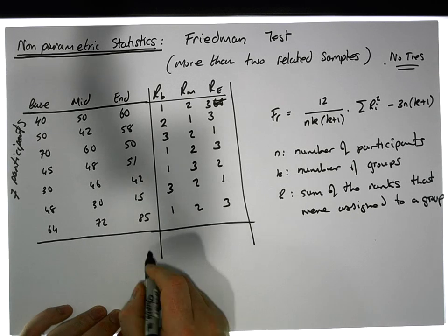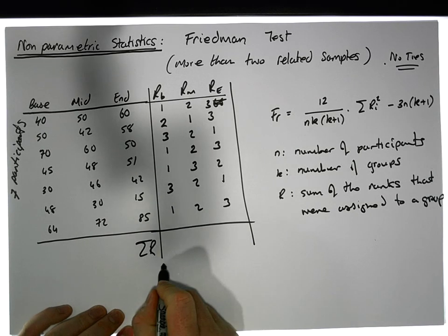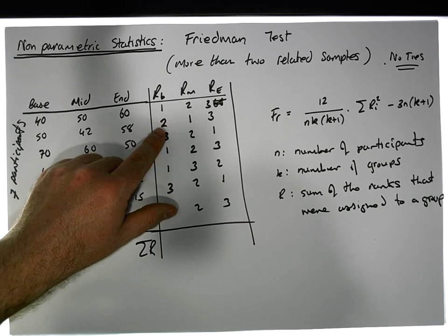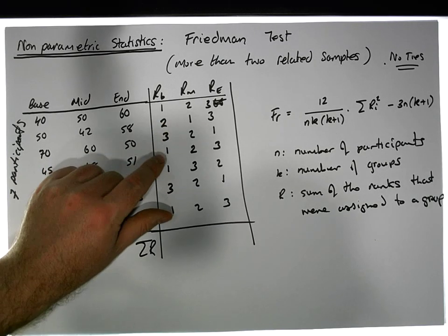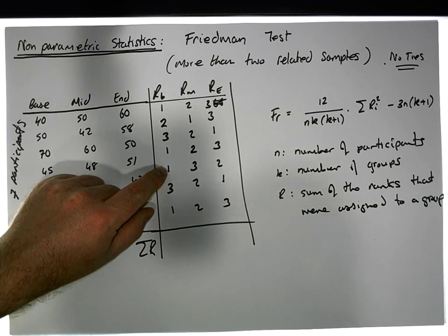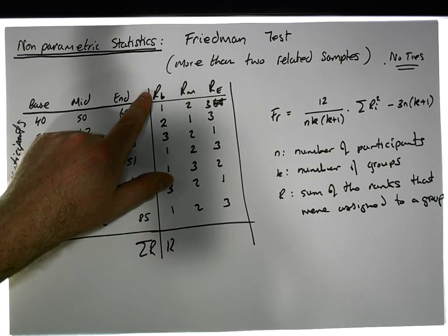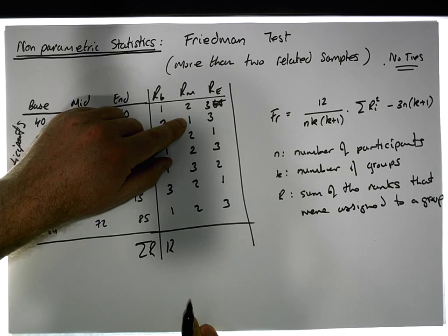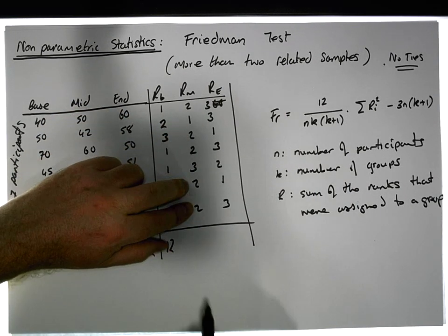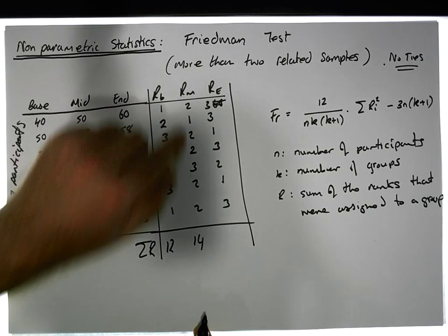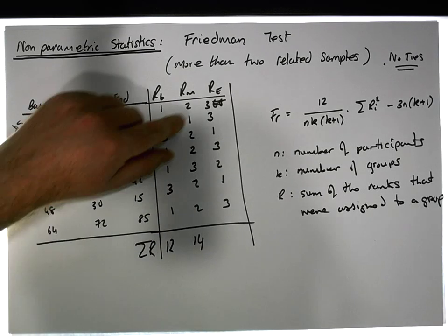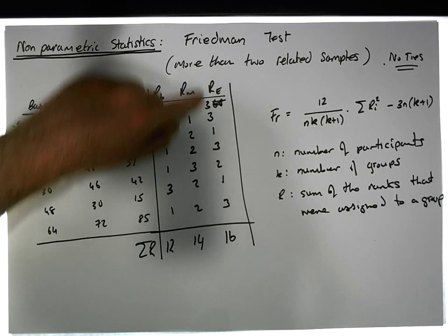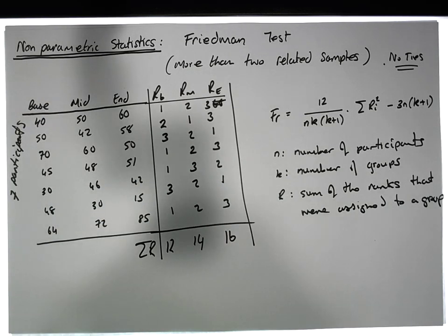Now we can sum up the ranks for each group. We have one plus two gives us three, six, seven, eight, and that gives us 11, 12. For group one at baseline, the sum of the ranks is 12. Then we have two, three, which gives us five, seven, ten - 14 is the sum of the ranks for the midpoint measurements. Then we have three and three is six, seven, ten, twelve, thirteen - 16 is the sum of the ranks for the endpoints.